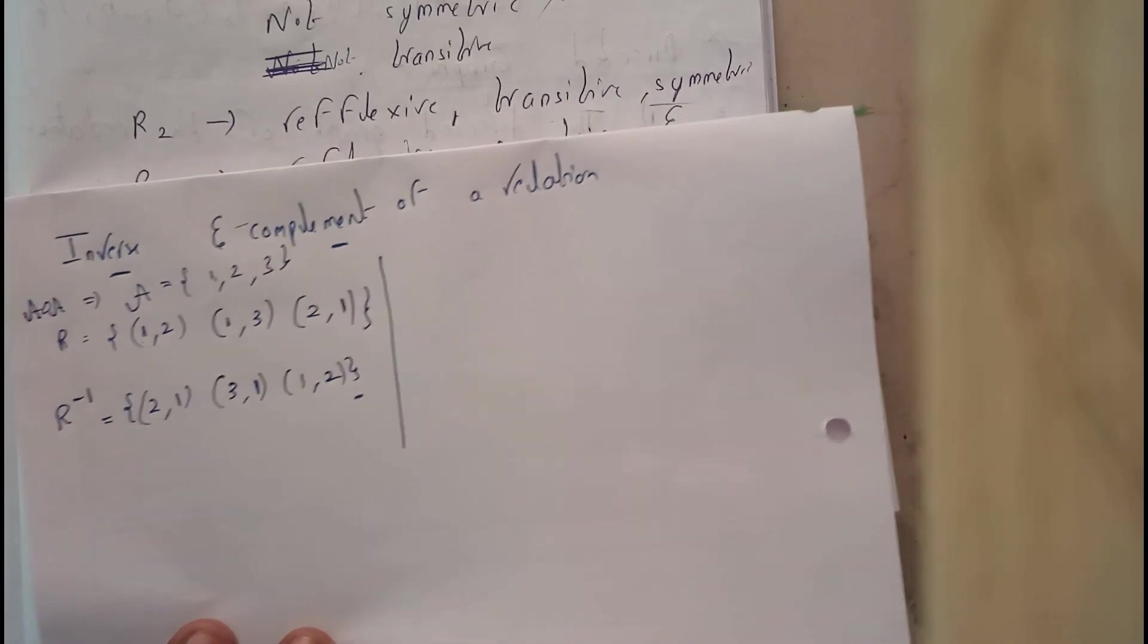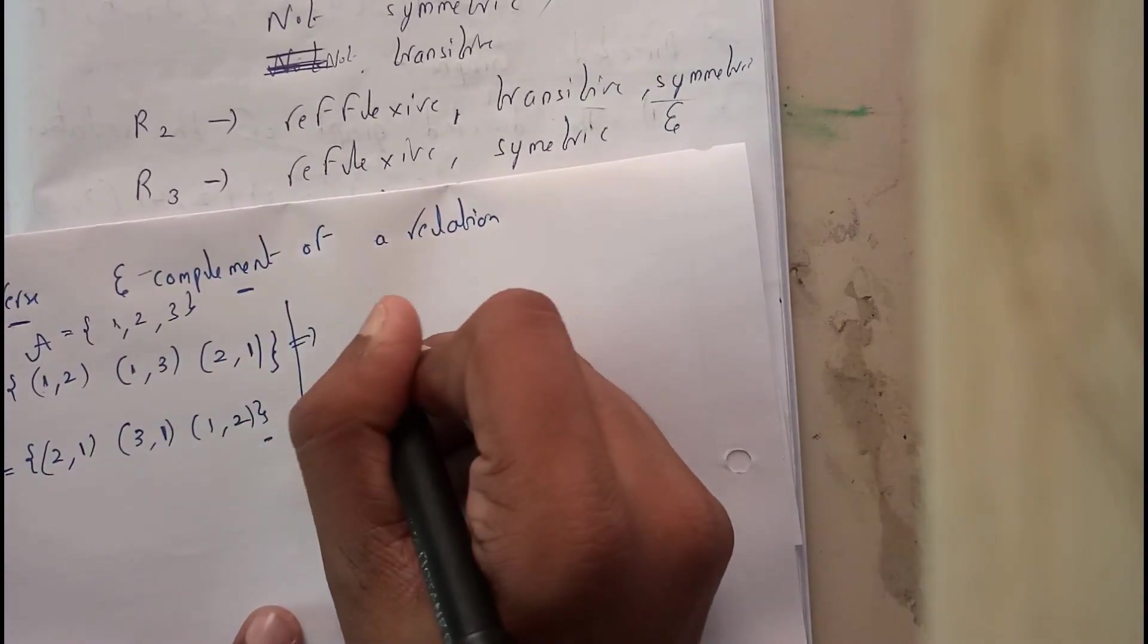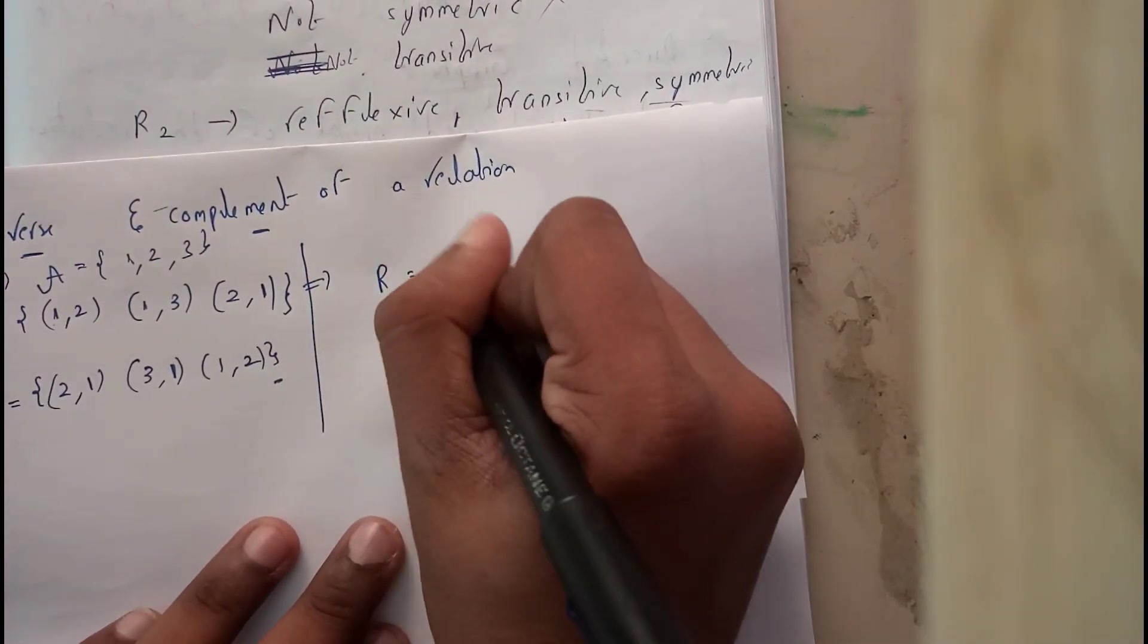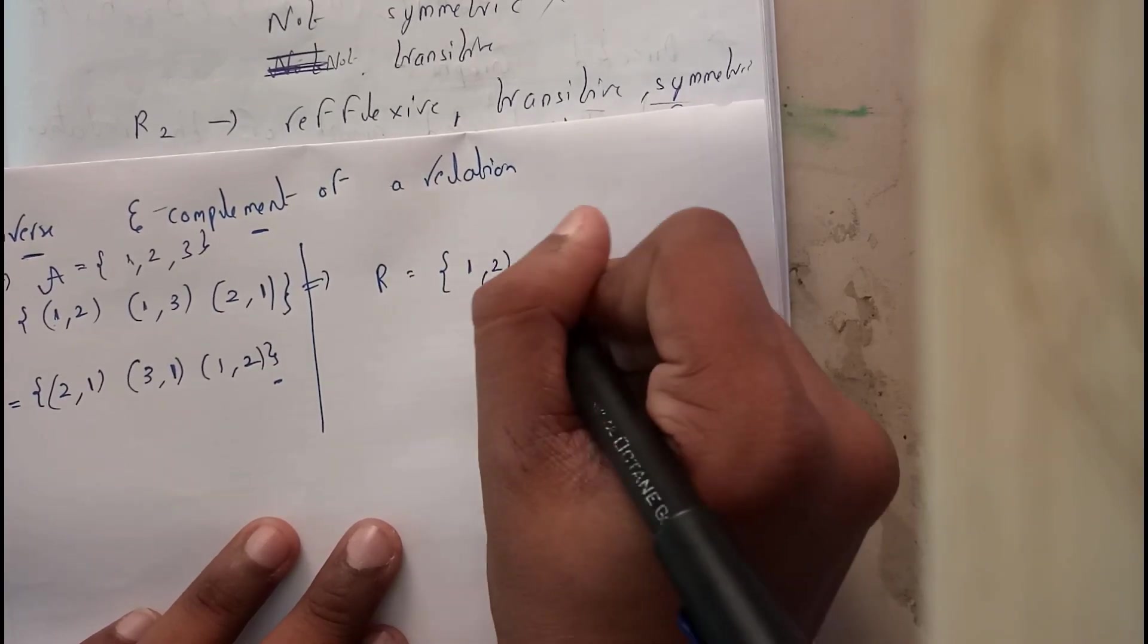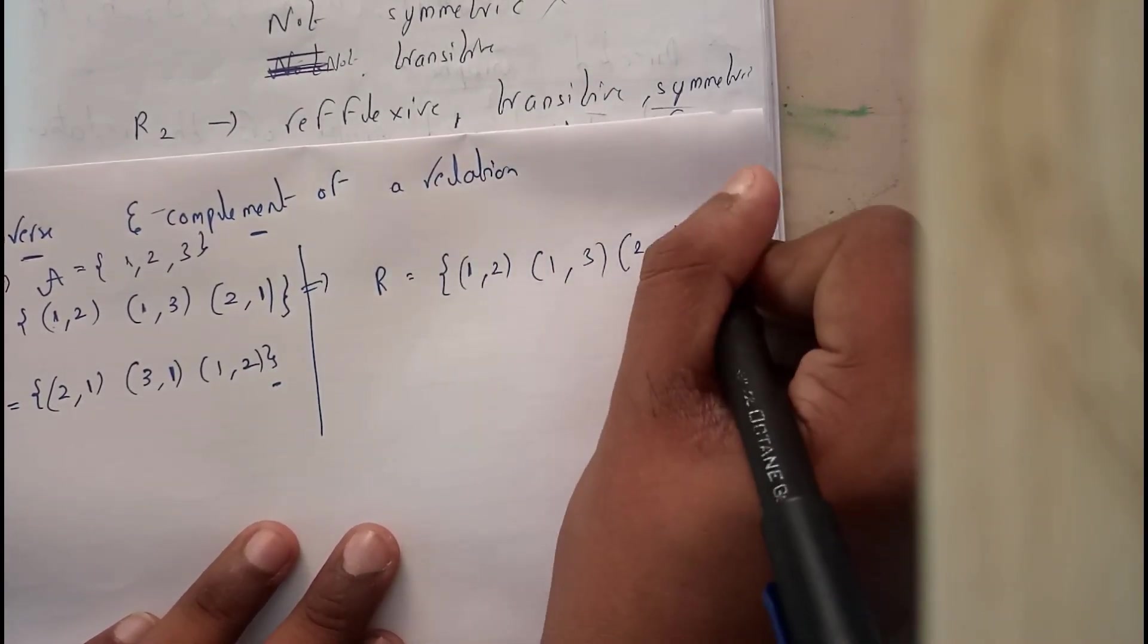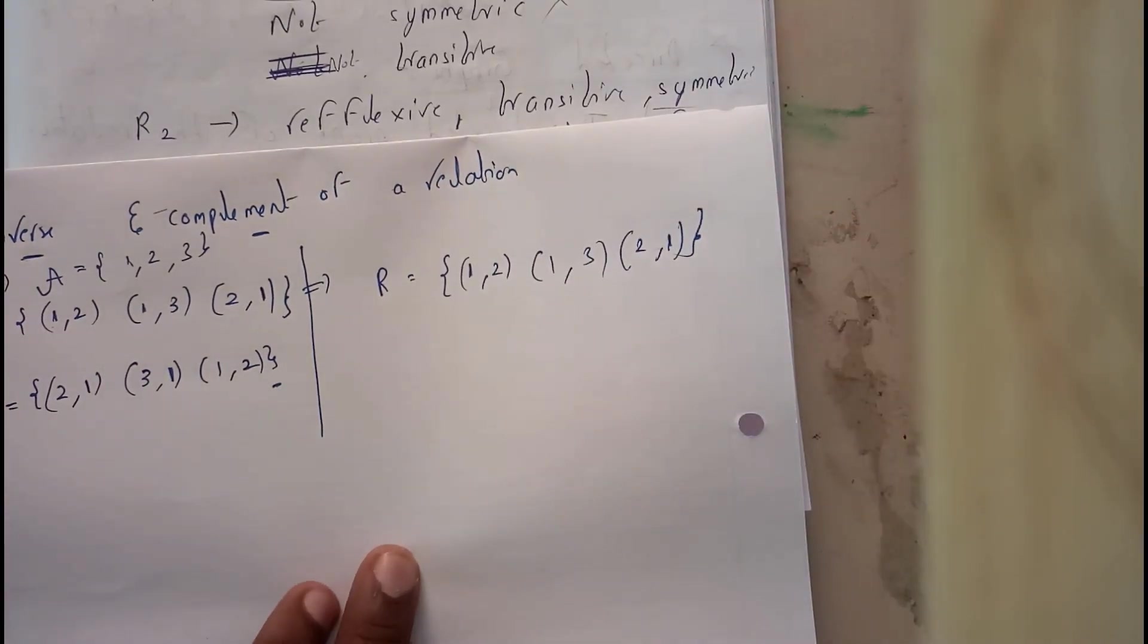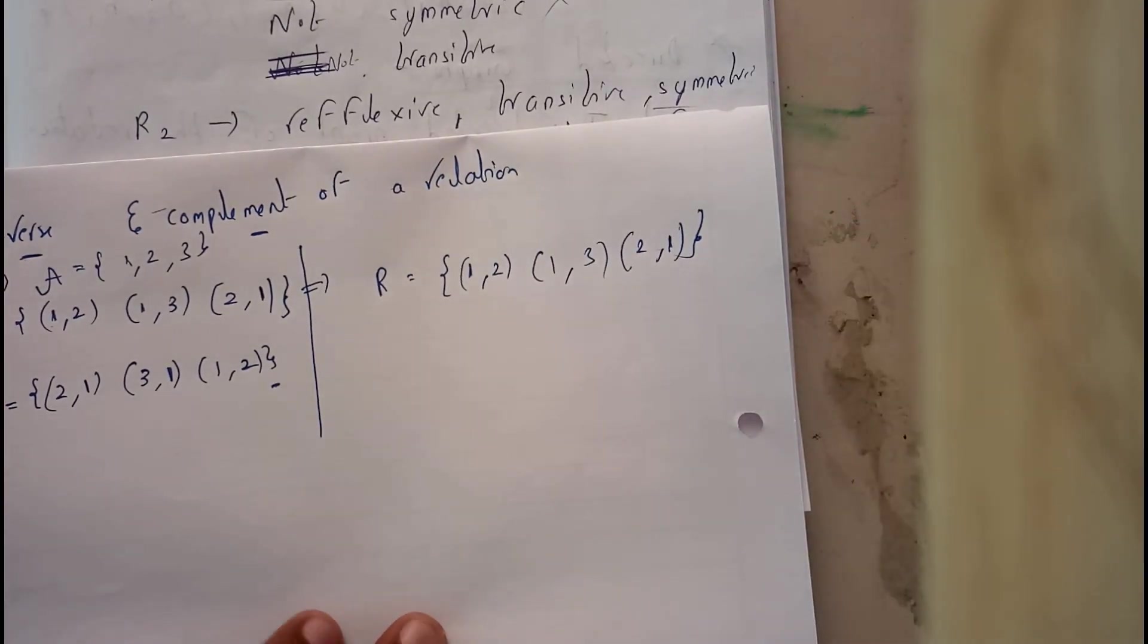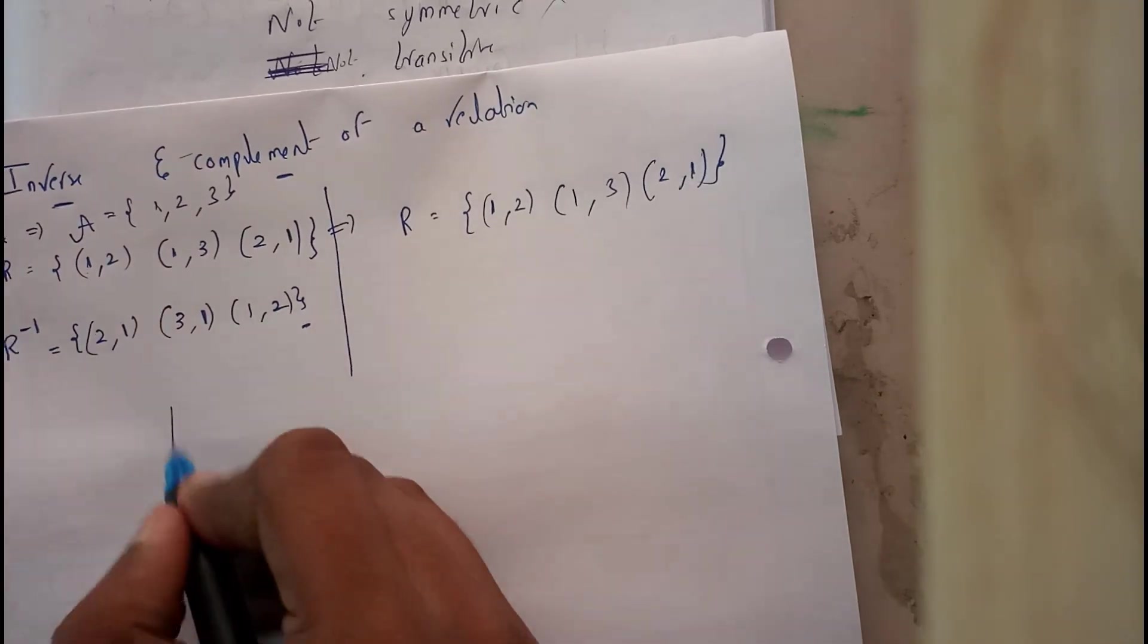Let us go through complement of a relation. Let us take this example as it is where R equals {(1,2), (1,3), (2,1)}. I think everyone knows what is a complement in sets.